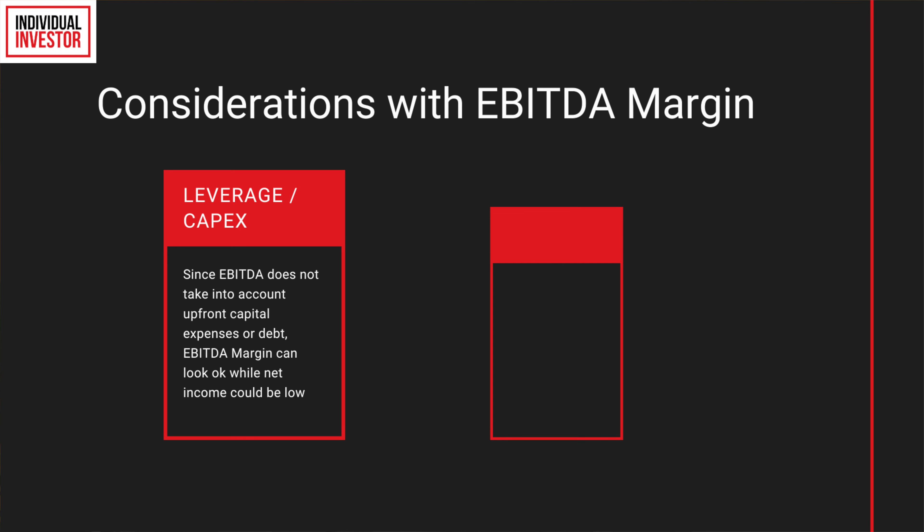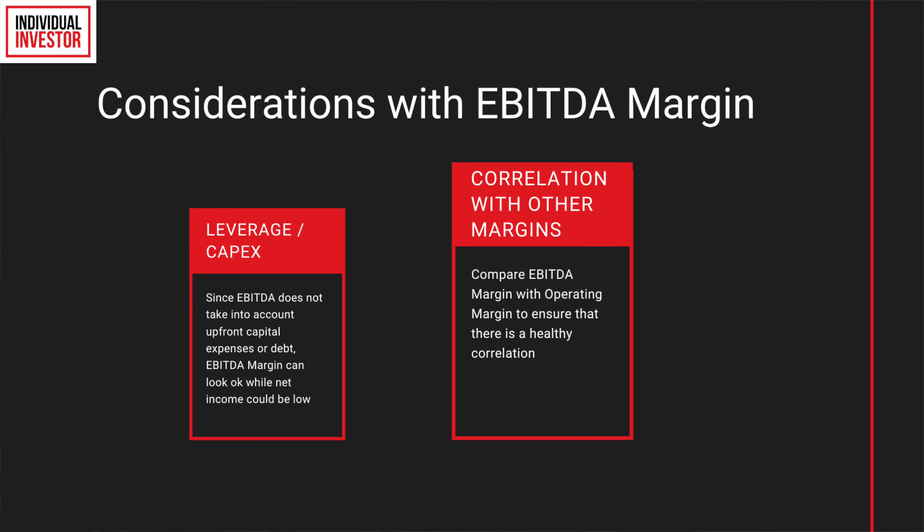Remember, though, that whenever you're dealing with EBITDA or any figure or ratio that relies on EBITDA, you're effectively not considering things like leverage or debt, taxes, or capital expenditures used to buy assets that then depreciate over time. Therefore, you can have a very attractive EBITDA or EBITDA margin but still end up with a very small income or sometimes even negative income. That's why it is recommended that you look at the EBITDA margin in conjunction with other margins like the operating margin.